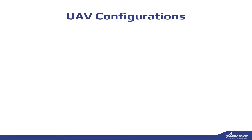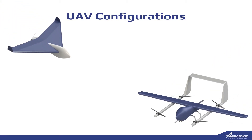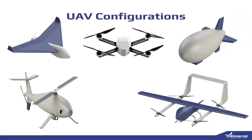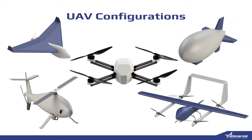UAVs come in different configurations, sizes, and materials. The most common configurations are fixed wing, vertical takeoff and landing, or VTOL, helicopter, blimp, and multi-rotors. We're going to go through each configuration with more detail in another video.